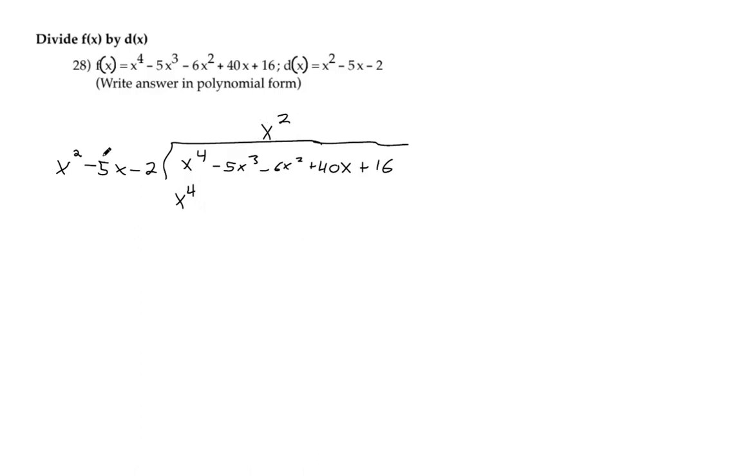But you've got to carry through and multiply it to everything else. Negative 5x times x squared is negative 5x to the third. x squared times negative 2 makes negative 2x squared.